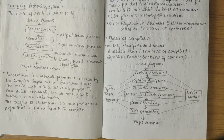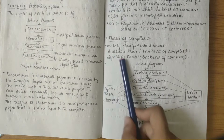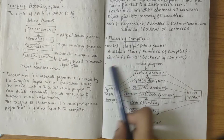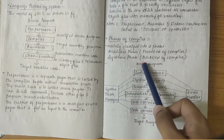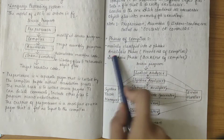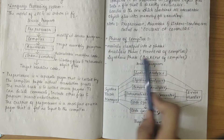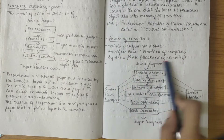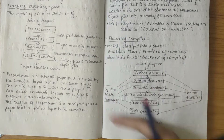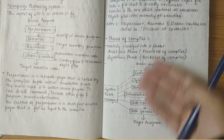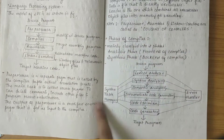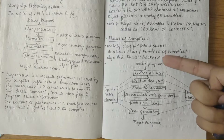In this video we'll be looking into the phases of compiler. The phases of compiler are mainly classified into two phases: the first one is called the analysis phase and the other one is called the synthesis phase. Analysis phase is also known as the front end of the compiler and synthesis phase is referred to as the back end of the compiler.